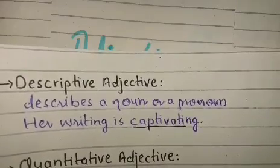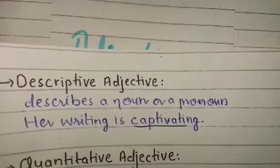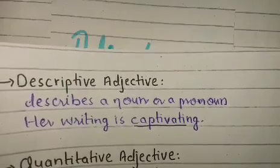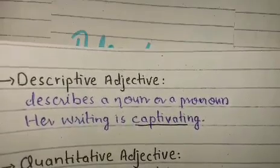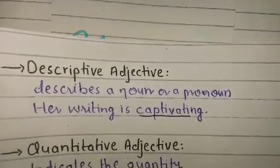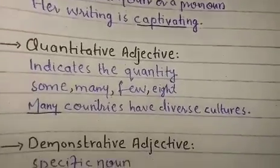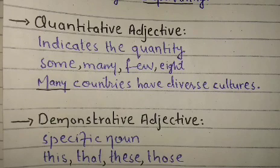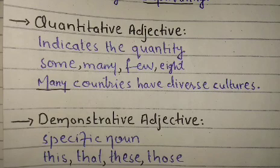A descriptive adjective can describe a person, a situation — like 'the party was boring' — or an activity, like 'drawing is an amazing experience for me.' Then there is the quantitative adjective. A quantitative adjective indicates quantity; it tells us how much of something there is. For example, 'many countries have diverse cultures' — 'many' lets us know more than one country.